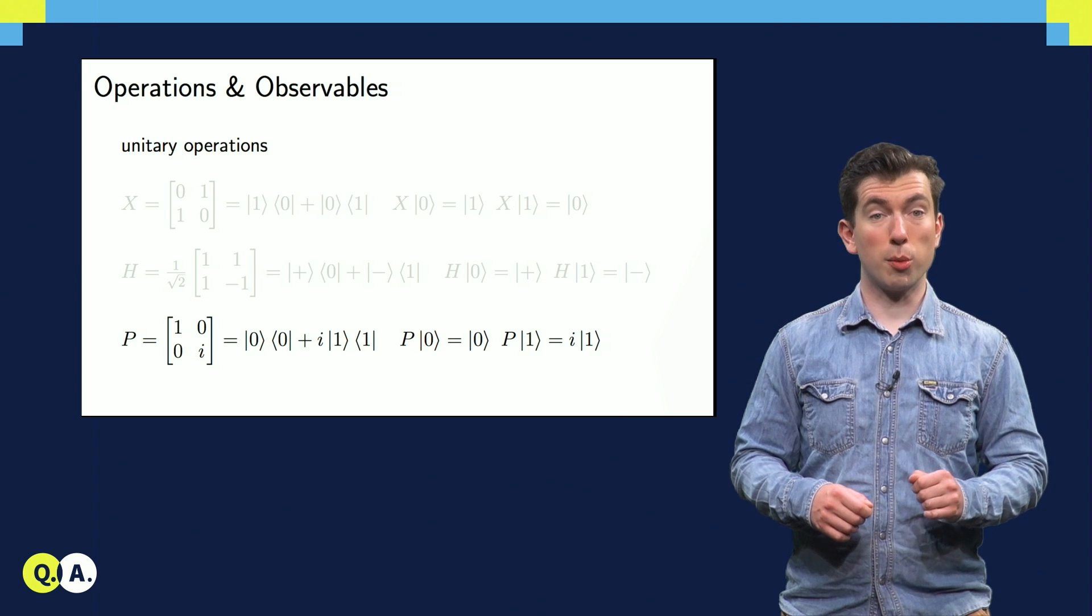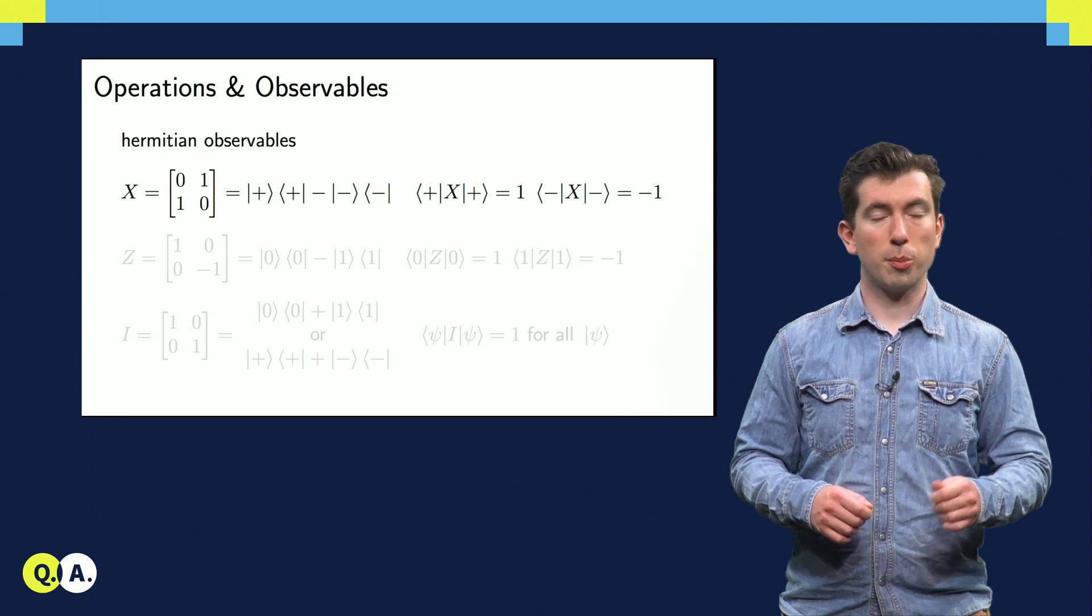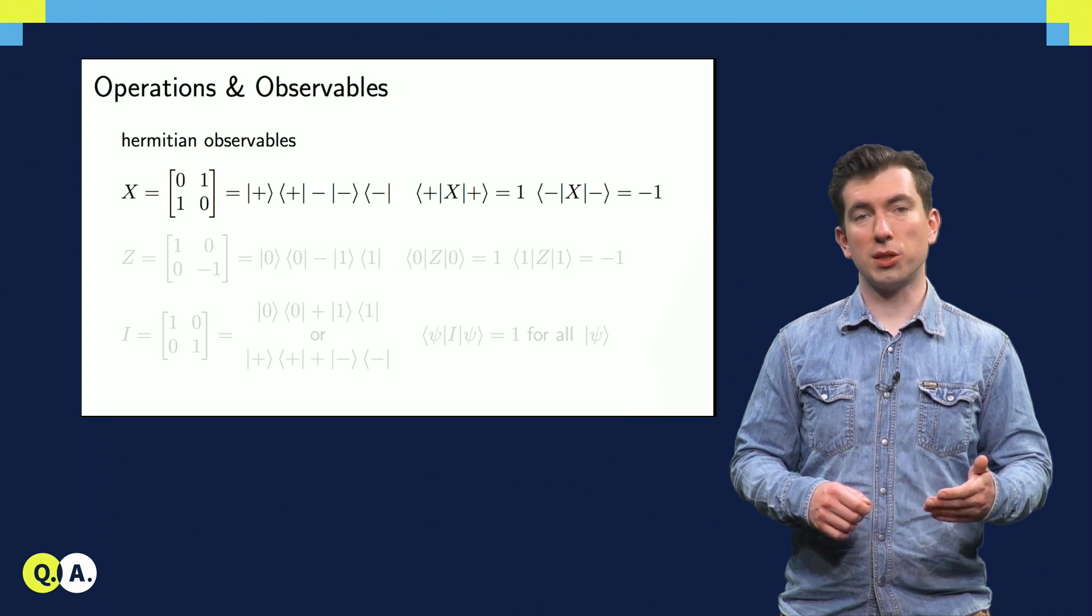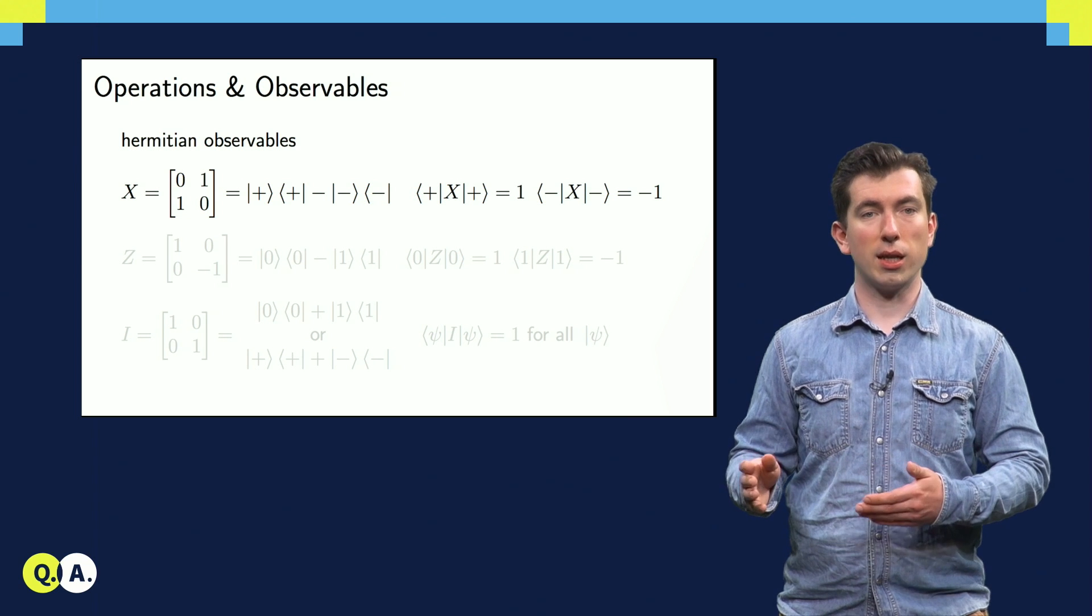Now let's take a look at a few measurement operators. In an interesting coincidence, the Pauli X shows up again. Since it's both unitary and Hermitian, we can use it both as an operation and a measurement.